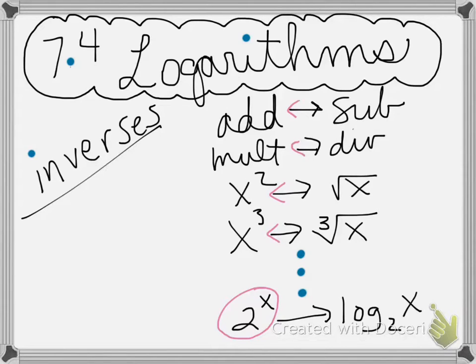So if I have 2 to the x, its inverse is going to be log base 2 of x, and vice versa. The inverse of log base 2 of x is 2 to the x.